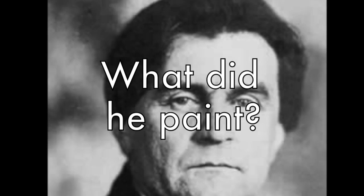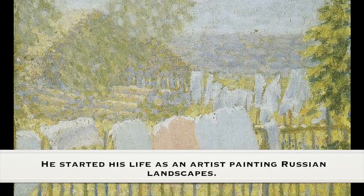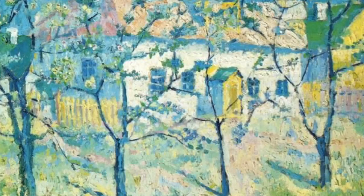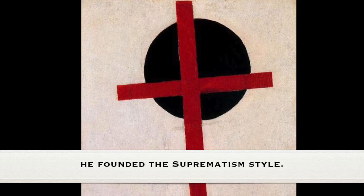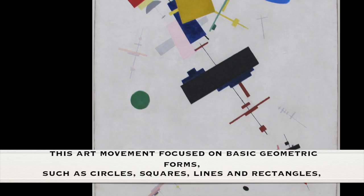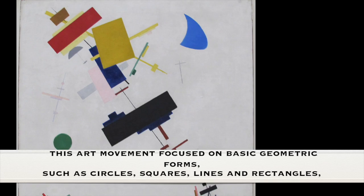What did he paint? He started his life as an artist painting Russian landscapes. He founded the suprematist style. These are movements focused on basic geometric forms, such as circles, squares, lines, and rectangles.